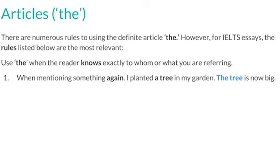Firstly, we use 'the' when we're mentioning something again. For example: 'I planted a tree in my garden. The tree is now big.' Notice that we use 'the' here. The reason for this is that we've already mentioned which tree we're talking about — the tree has already been mentioned in the previous sentence, so we already know to whom or what we are referring.